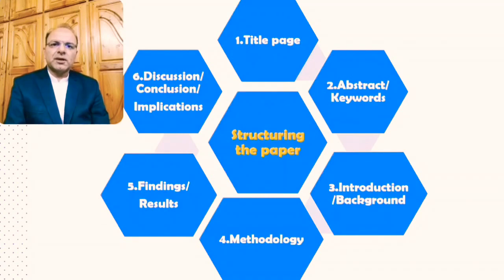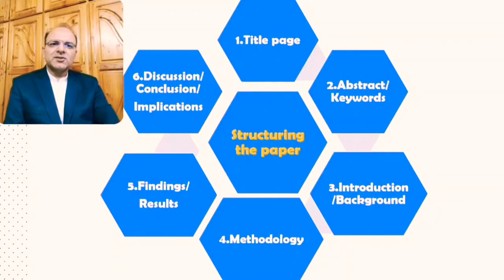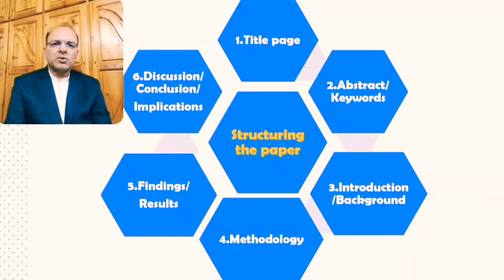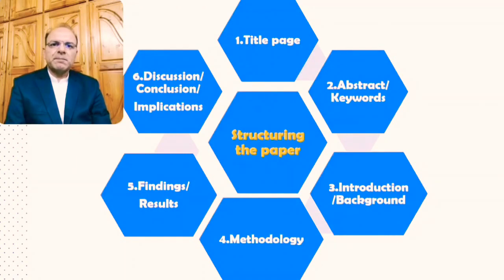Some research papers also have an acknowledgement section, where there is acknowledgement of the people or institutions that have in some way played a support role in the process of research. This is the general structure of the research paper. Generally in social sciences, the length of a research paper varies between 5,000 words to 7,000 or 8,000 words, though some papers are quite extended as well. These different sections can be divided in terms of word allocation or word limit.